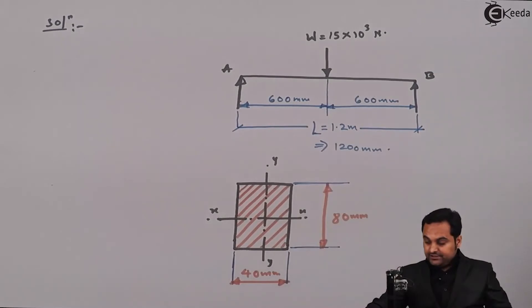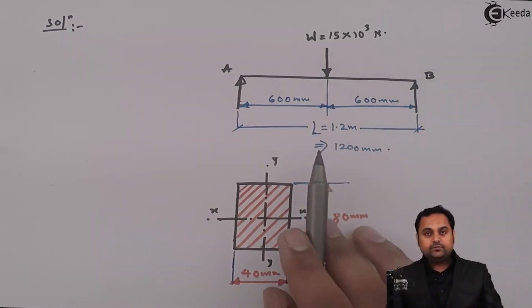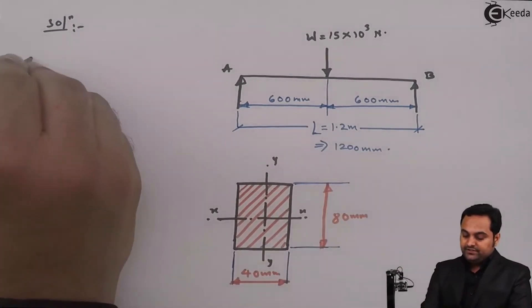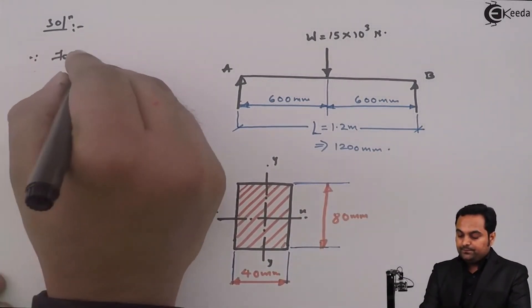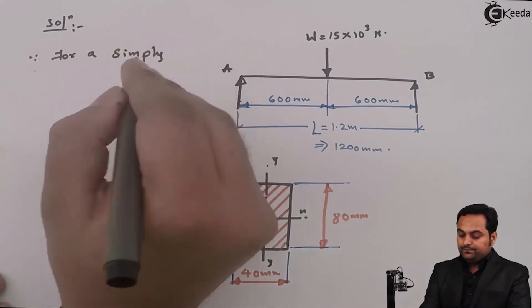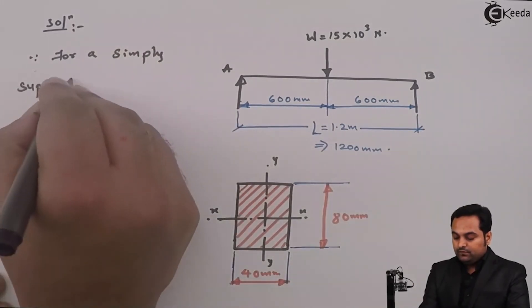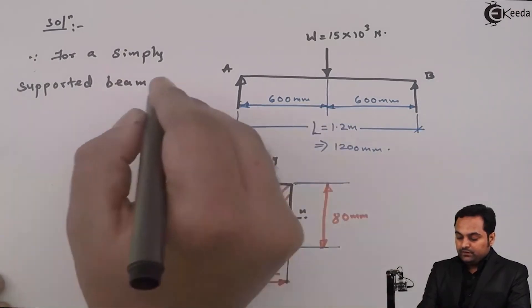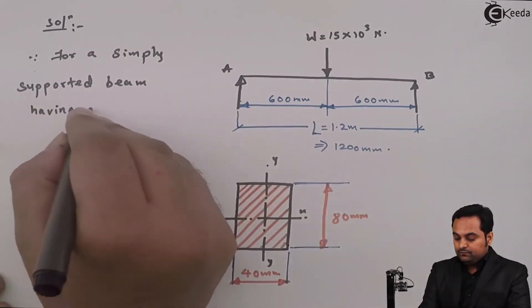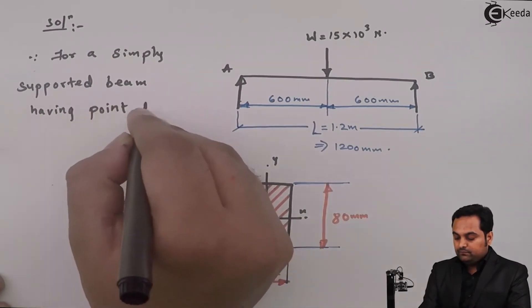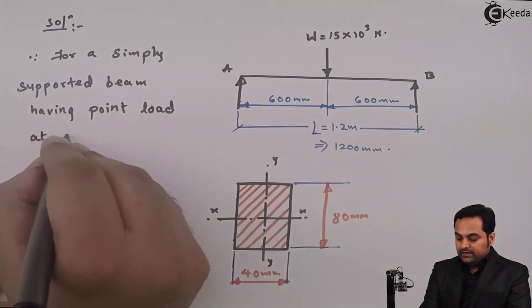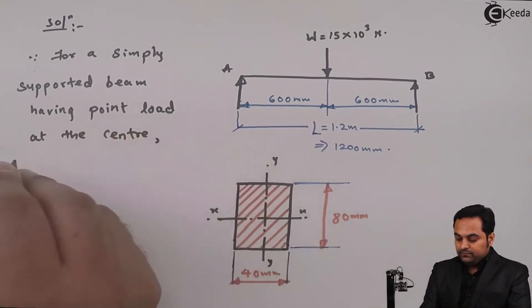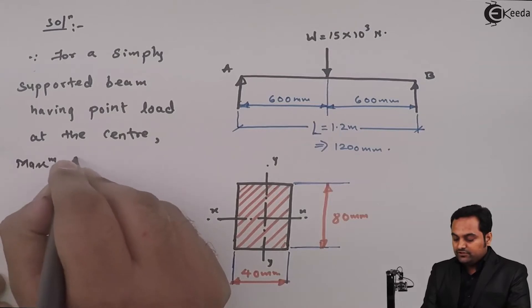Now, after completing this, as we have to find out the maximum deflection, first I will write the formula for such a case. Since for a simply supported beam having point load at the center, therefore, that deflection is called as maximum deflection.